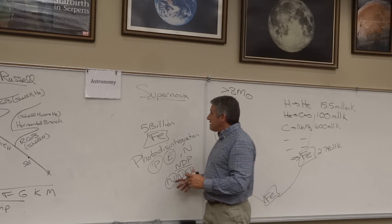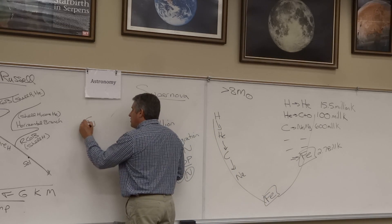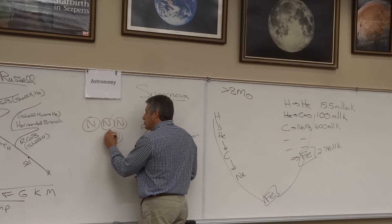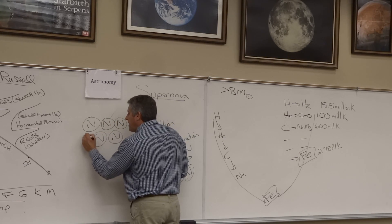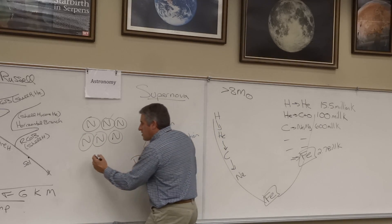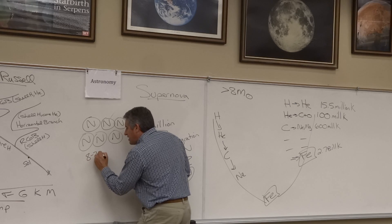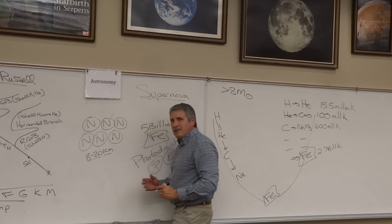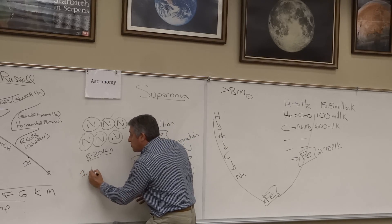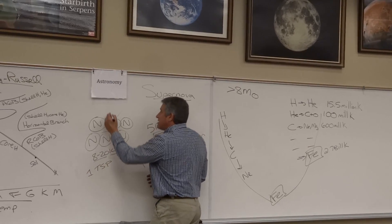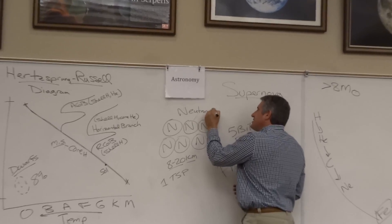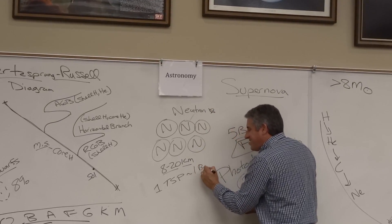What's left behind from this supernova, from this star that's greater than eight solar masses, is a ball of neutrons held up by neutron degeneracy pressure. This ball of neutrons is only about 8 to 20 kilometers across. It has a density so high that one teaspoon of a neutron star weighs a whopping one billion tons.